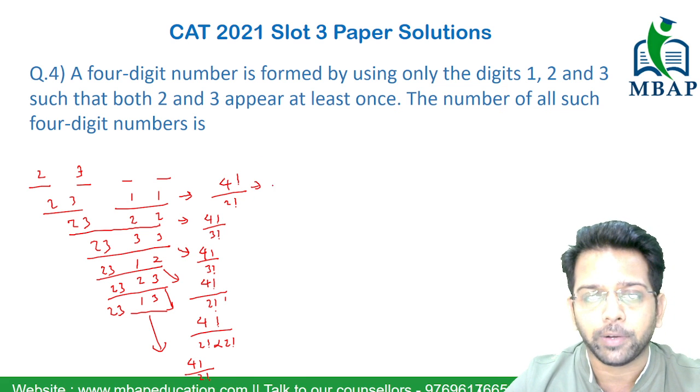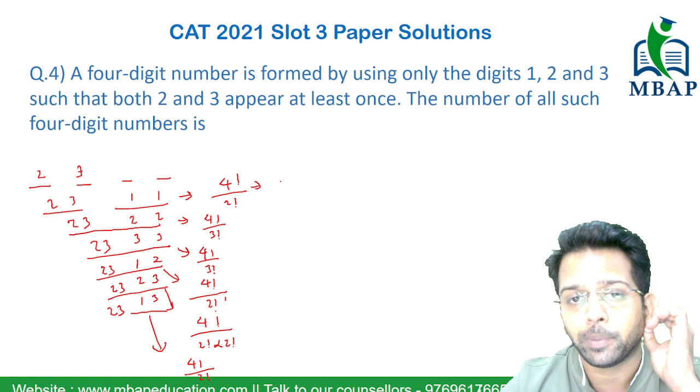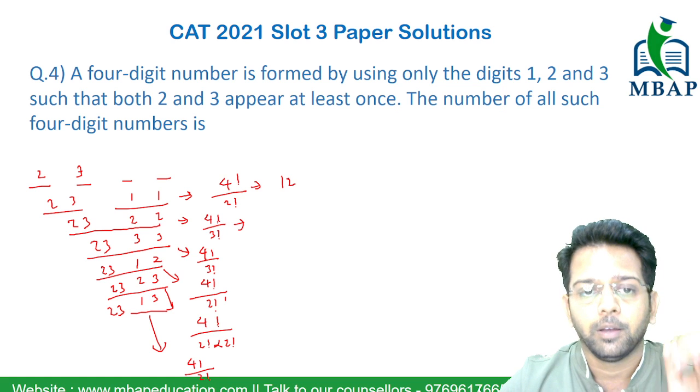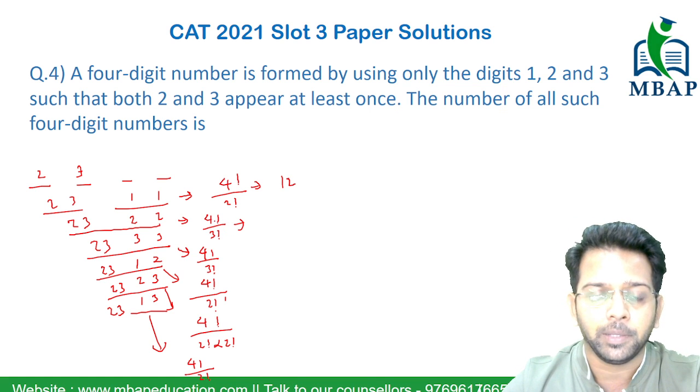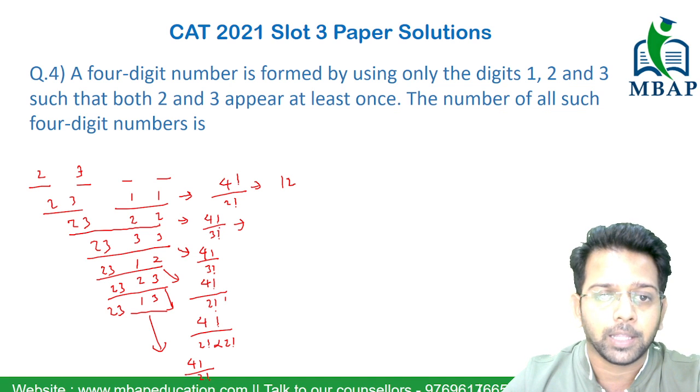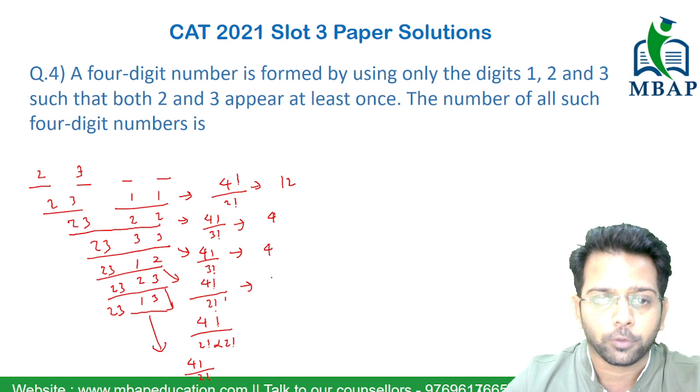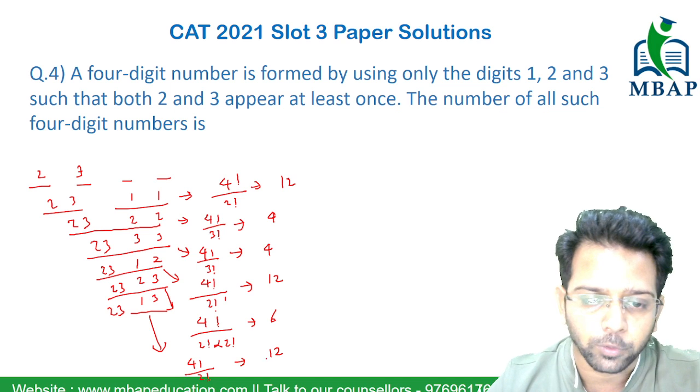Now 4 factorial by 2 factorial will be how much? 24 by 2 will give you 12. 4 factorial by 3 factorial will be how much? 3 factorial will get cancelled, so only 4 is left, 4 will come out. Again, 4 factorial by 2 will give you 12. This will be half of 2, 12 which is 6. And this will be 4 factorial by 12 which will be again 2. 4 factorial by 2 which will again be 12.